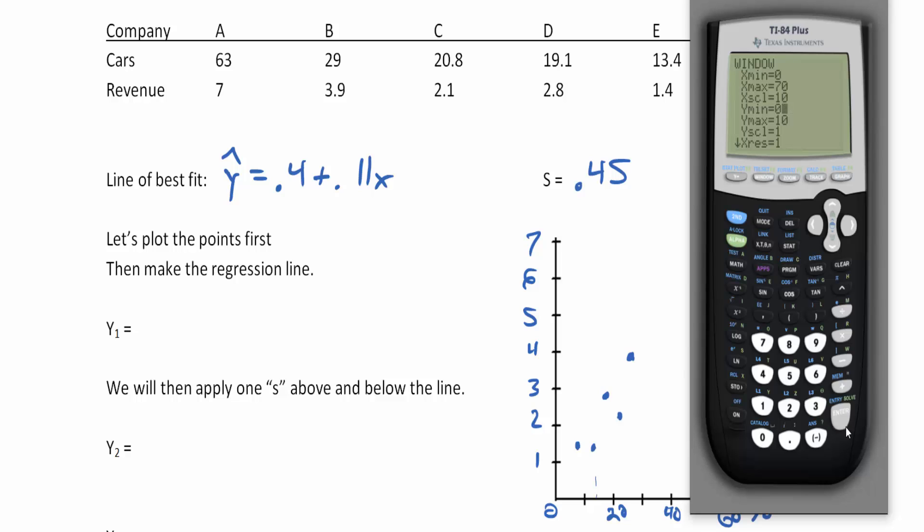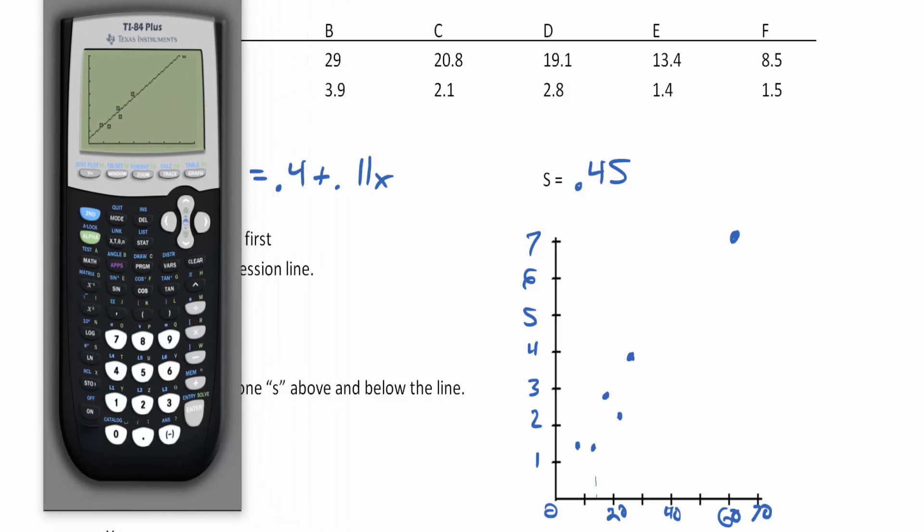Our y minimum goes zero to seven by ones. Hit graph. Now it looks great. There's our line of best fit.